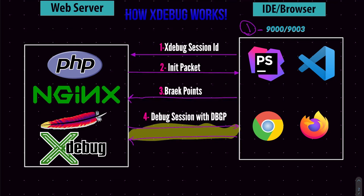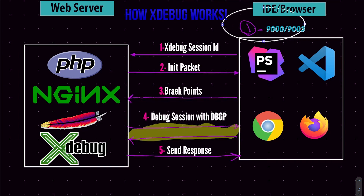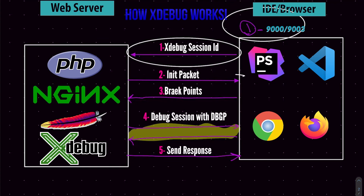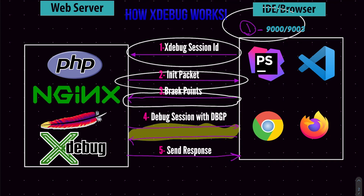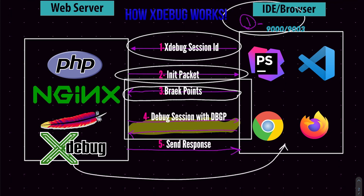After the debugging session finishes, the web server sends all the remaining data through the browser to execute the code and display the page. To recap: first, the IDE listens on port 9000 or 9003. Second, you trigger Xdebug from your browser by sending a request, such as to the login page. Third, Xdebug calls your IDE to initialize the debugging session. Fourth, the IDE calls Xdebug back and sends the breakpoints — informing it which lines or parts of code to debug. Fifth, the IDE and Xdebug initialize the DBGp protocol to start communication. Finally, the web server executes the rest of the script and sends the response to the browser.